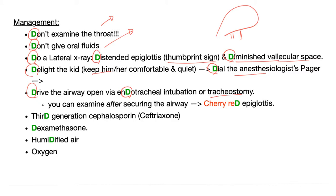We try not to do cricothyroidotomy in kids because they need their voice. Once you have secured the airway, if you'd like to do your physical exam, do it after securing the airway — you'll find a cherry red epiglottis: redness, hotness, swelling, pain, loss of function.